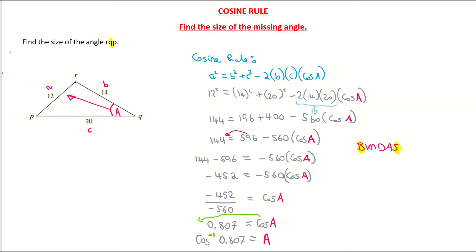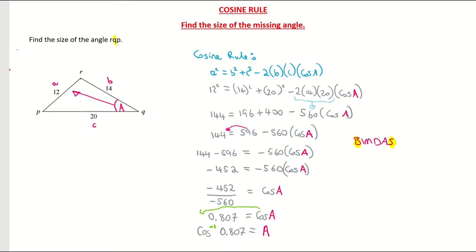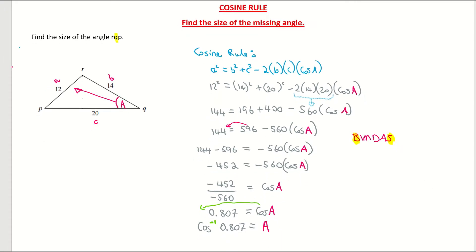And you now go to your calculator, and if you're using a Casio, you hit the shift button. So you just make sure that you're going for the inverse cos. So it's shift cos, and then you type in 0.807, hit your equals, and that is giving me an angle of 36.196.